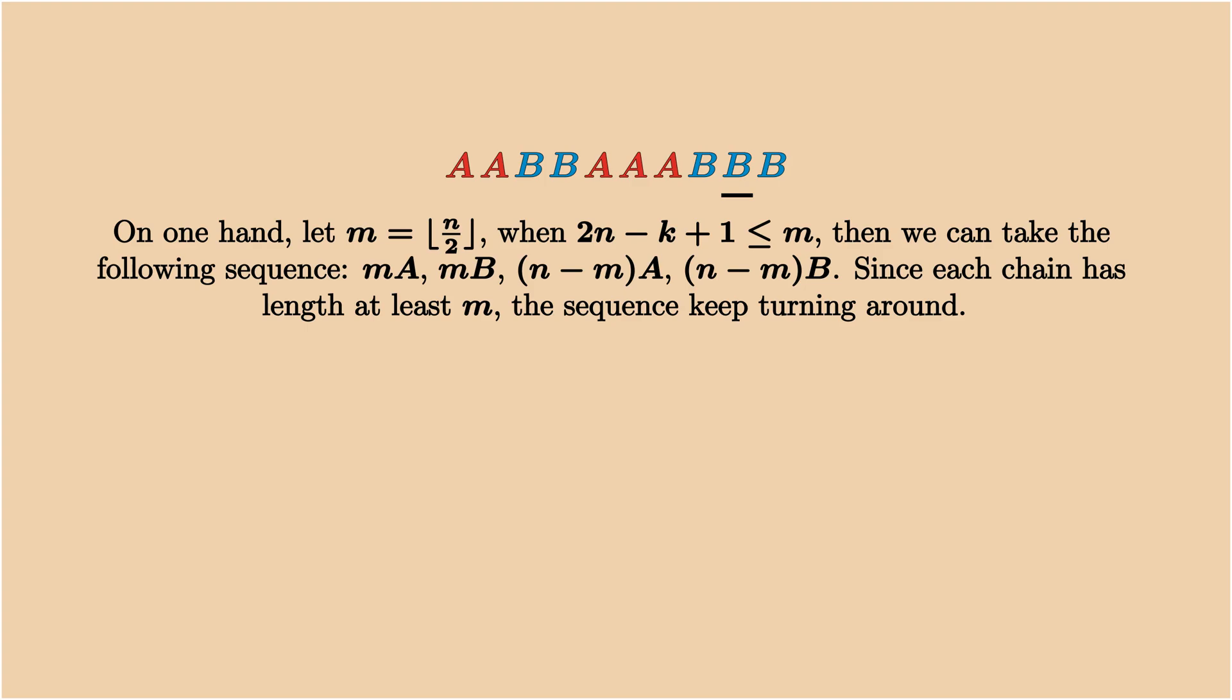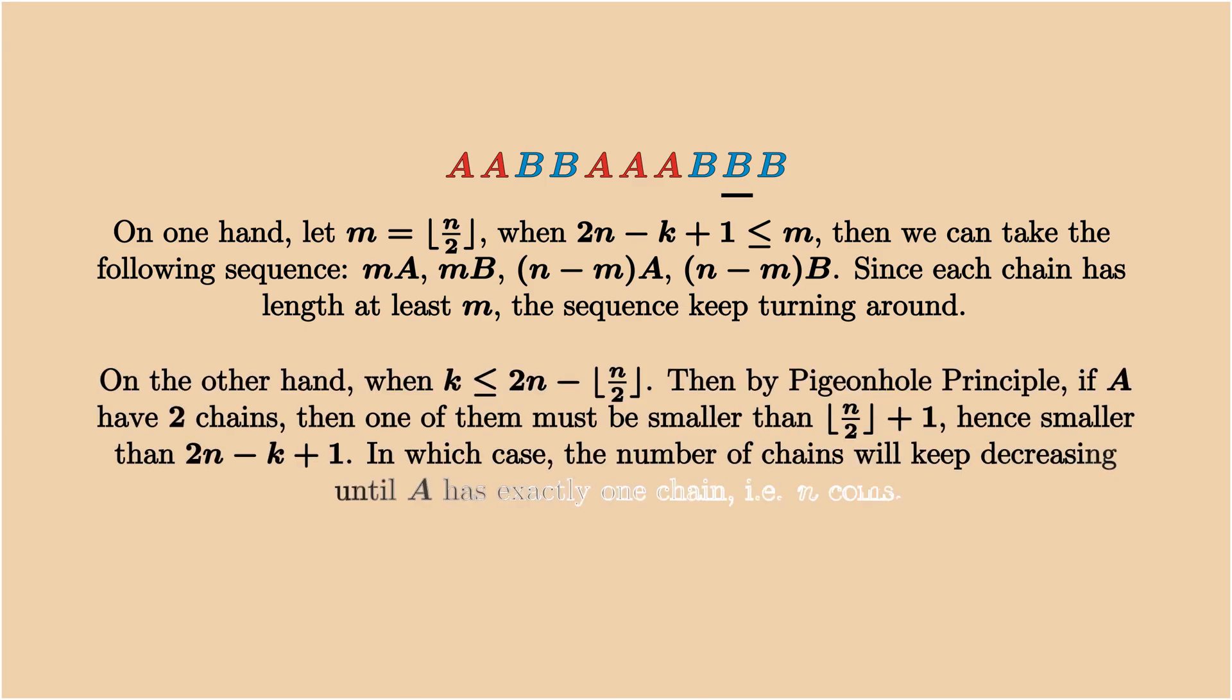On the other hand, when k is smaller than 2n - ⌊n/2⌋, by pigeonhole principle, if A has at least two chains, then one of them must be smaller than ⌊n/2⌋+1. So the number of chains will decrease until there is only one chain of A left. In this case, we guarantee that the number of chains will decrease to 2, and we get what we want.